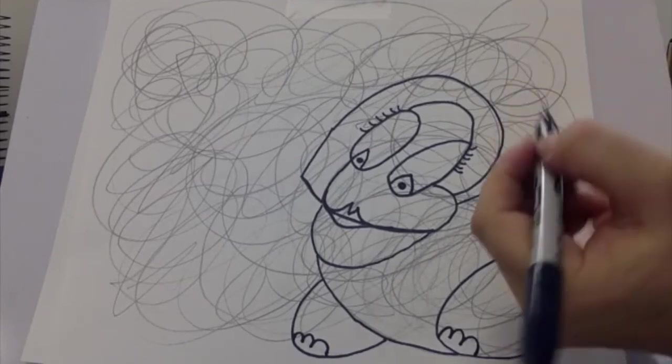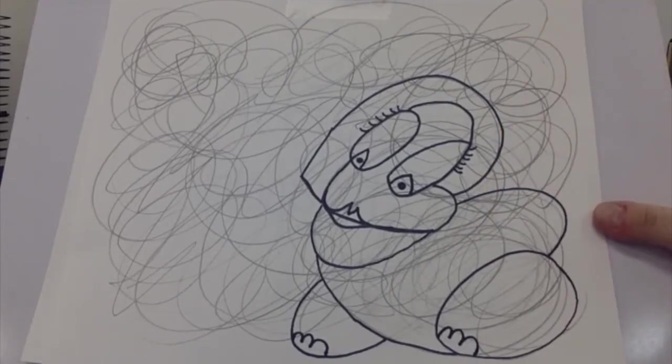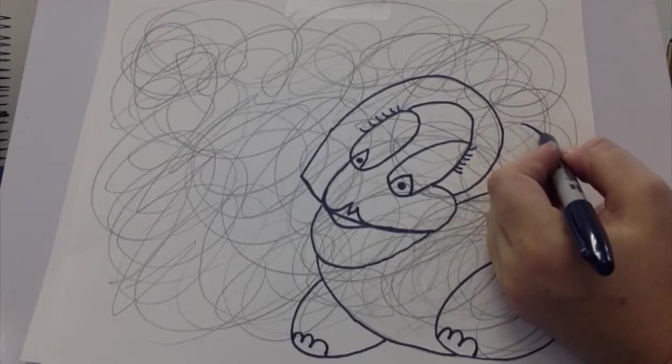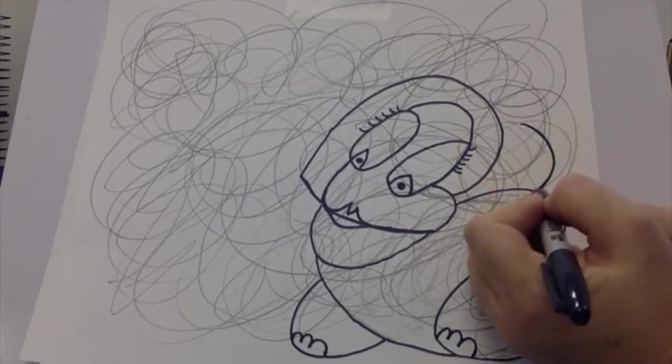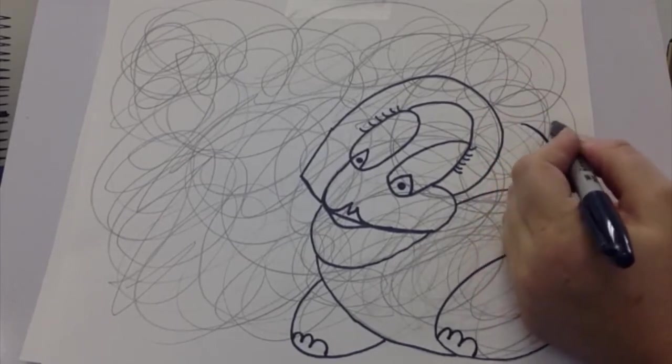And then I'm going to add a tail. I think this scribble line makes a great tail for my imaginary creature.